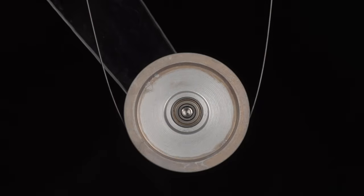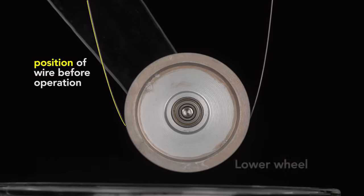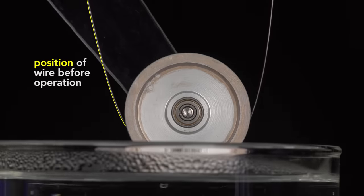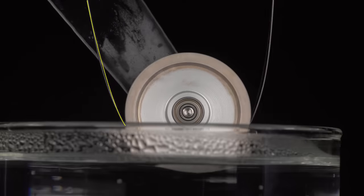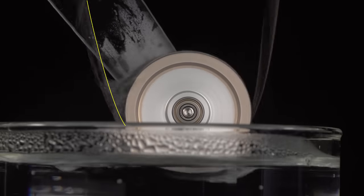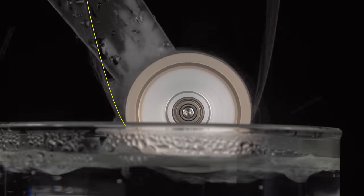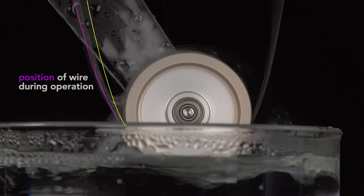To see how that causes the engine to operate, watch what happens as I contact the lower wheel with the heated water. I'll mark the position of the wire on the left with a yellow line. Then, when I start the wheel, the wire's distance from the initial position is much greater. It's hard to see, so I'll mark its position with a purple line.